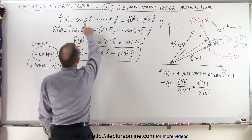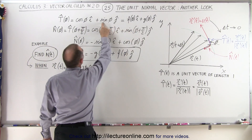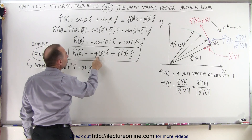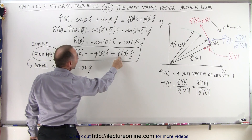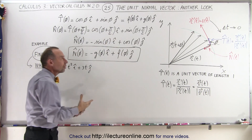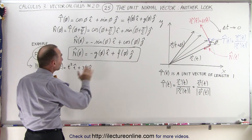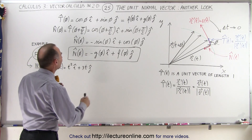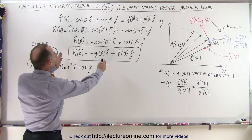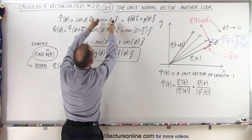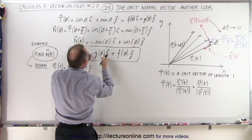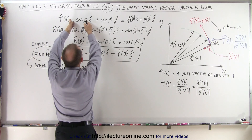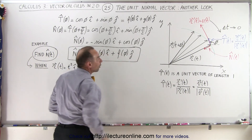So if the x-component of the tangent vector is f(phi) and the y-component is g(phi), then to define the unit normal vector, we take the y-component of the unit tangent vector and make it the negative x-component of the unit normal vector, and we take the x-component of the unit tangent vector and make it the y-component of the unit normal vector.